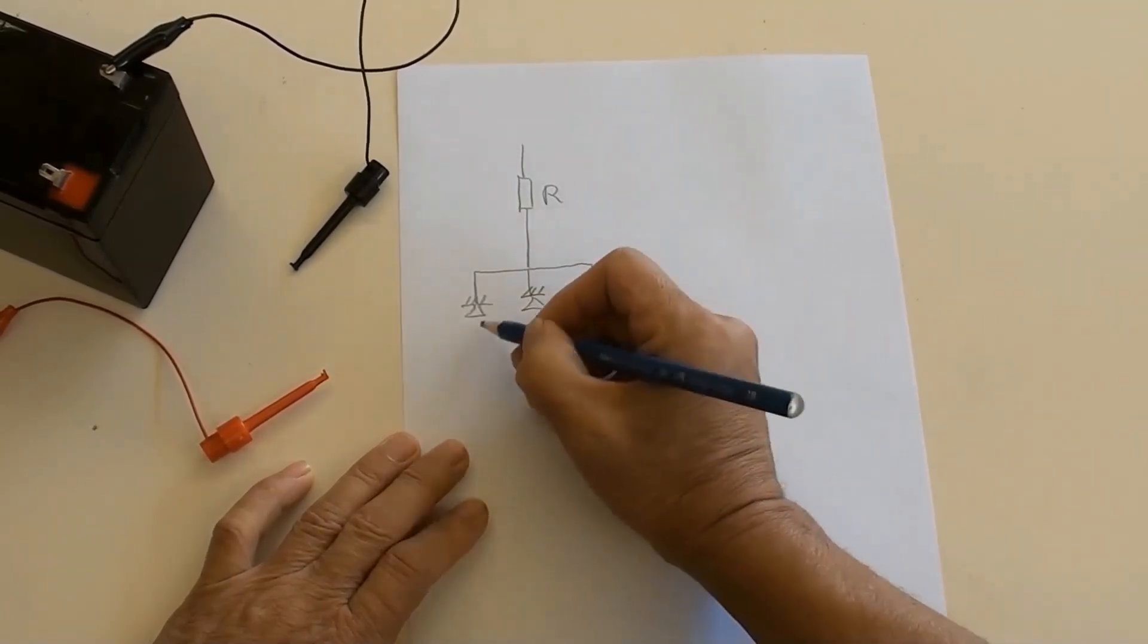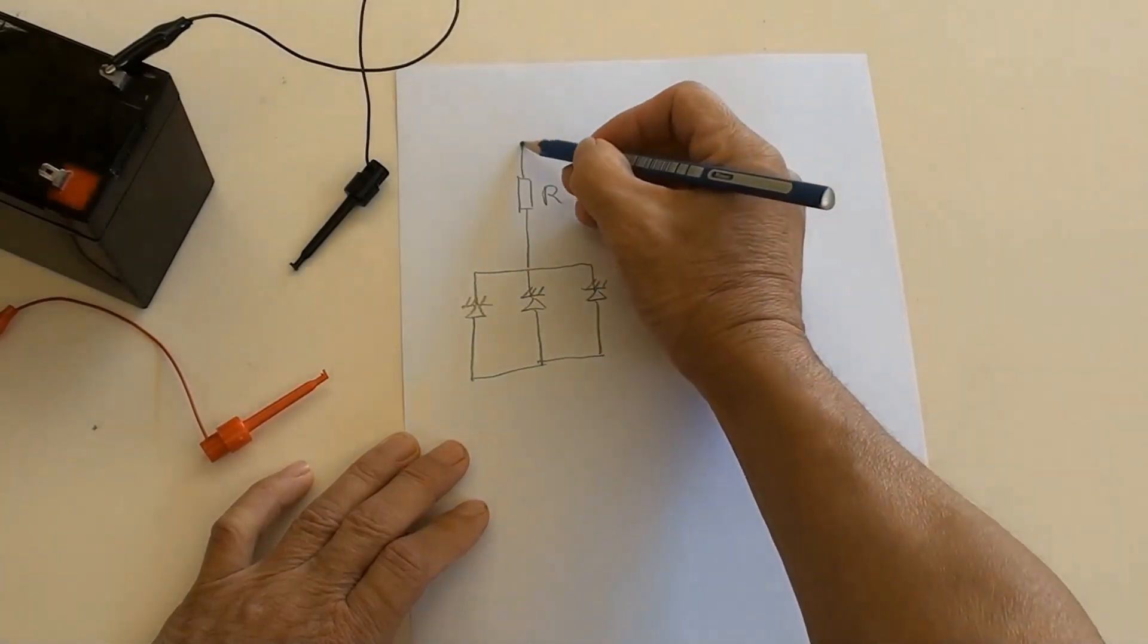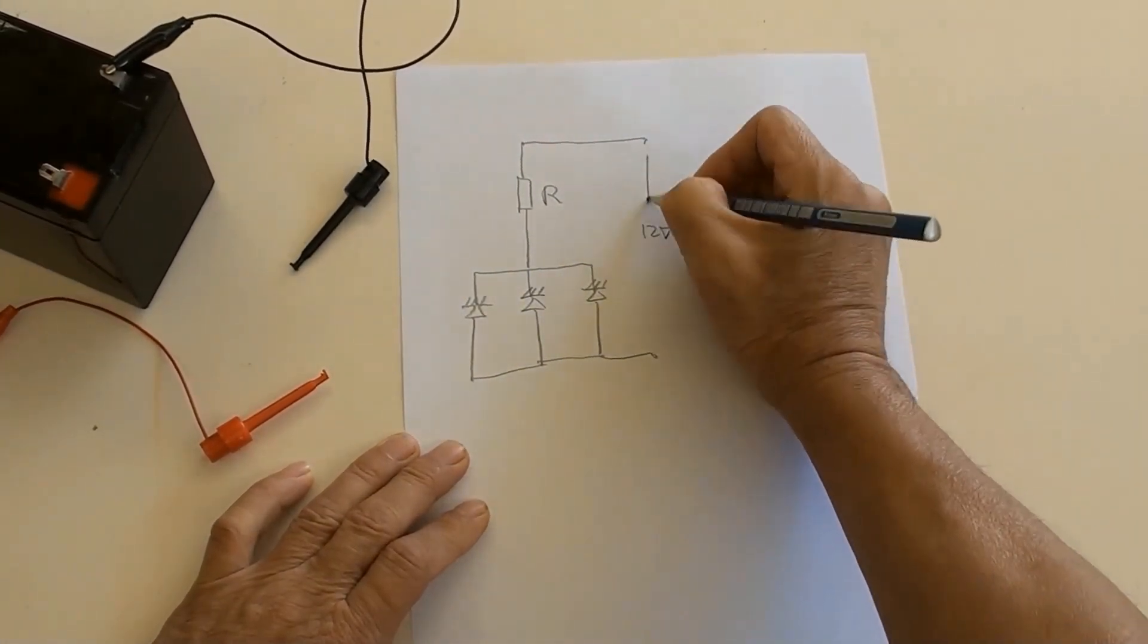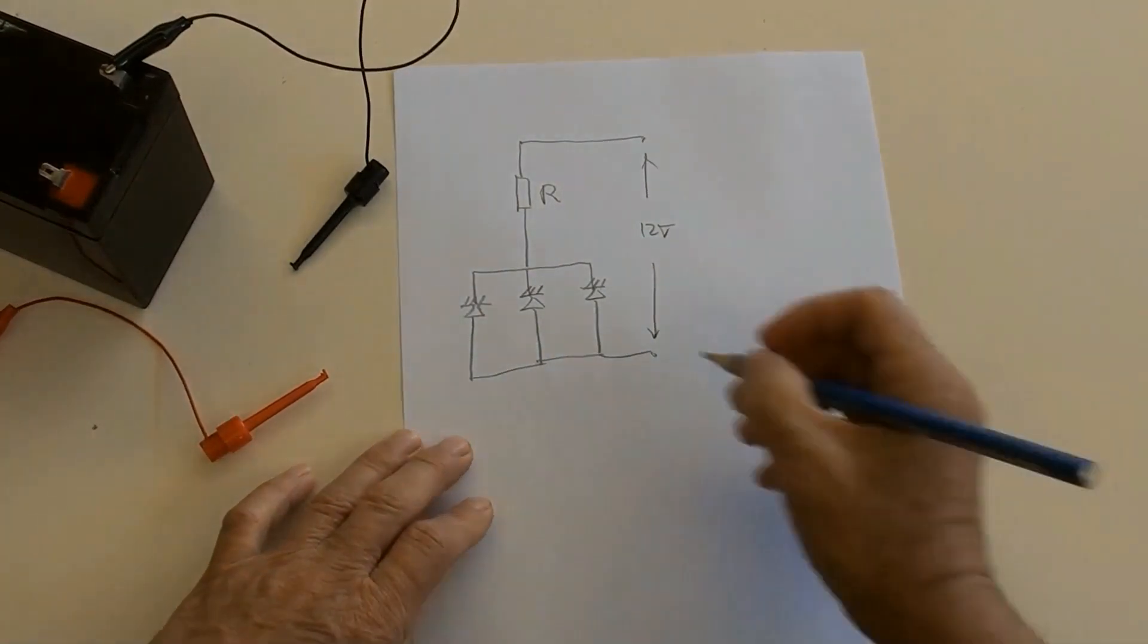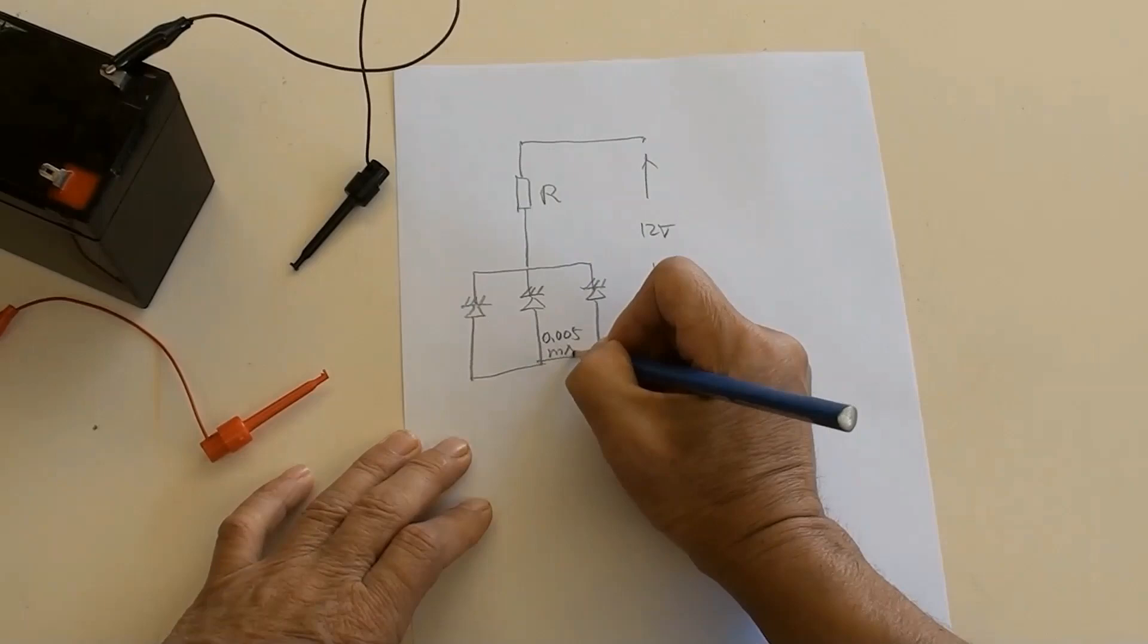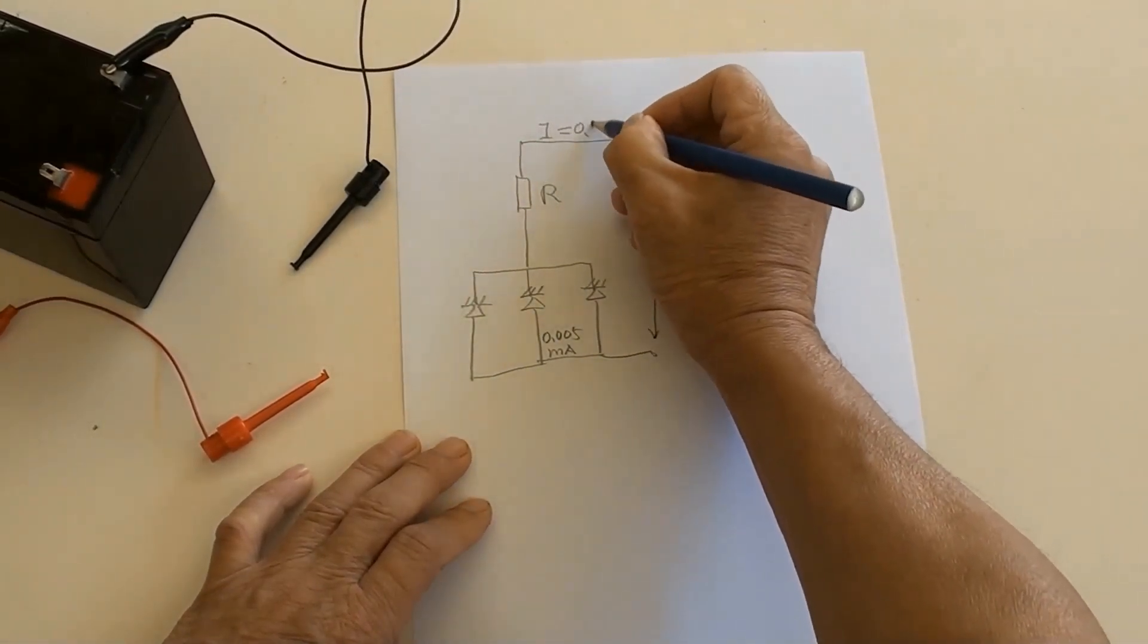However, three LEDs in parallel each other with a resistor in series commonly connected in practice. Suppose 5 milliamperes current goes through each LED as designated, then total current will be 15 milliamperes here.